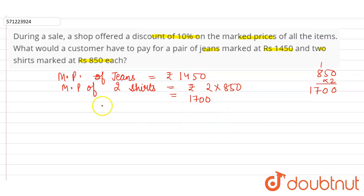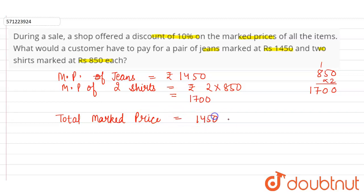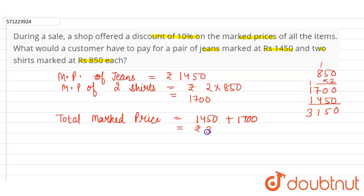Now, the total marked price of one pair of jeans and two shirts will be equal to rupees 1450 plus rupees 1700. So 1450 plus 1700: 0, 5, 7 plus 4 is 11, and 1 plus 1 plus 1 plus 1 is 3. So the total marked price of all three items is rupees 3150.